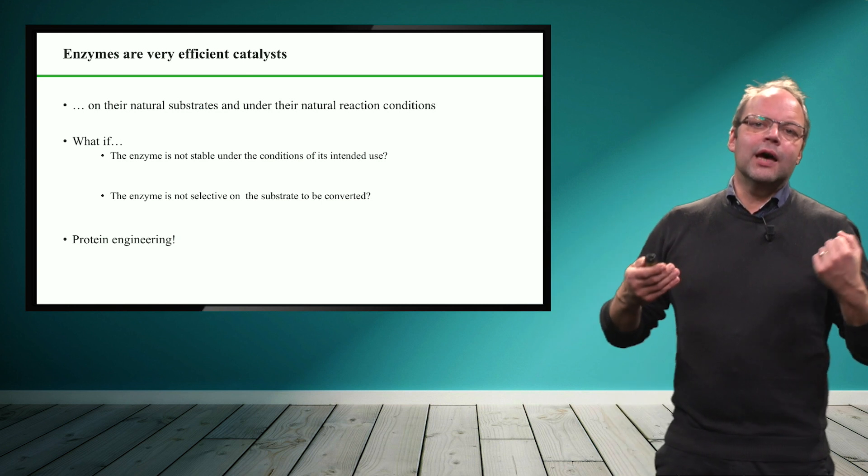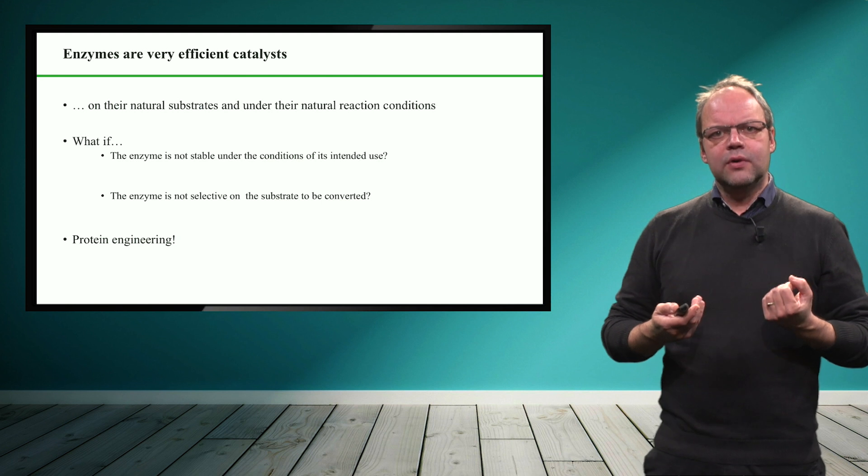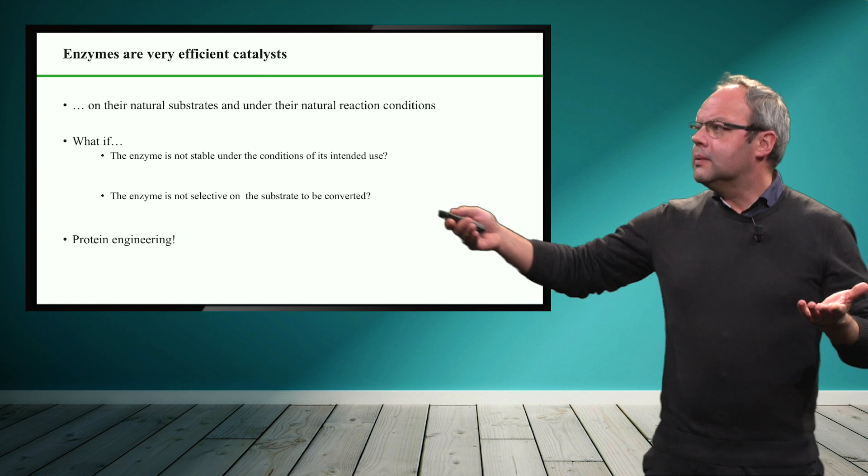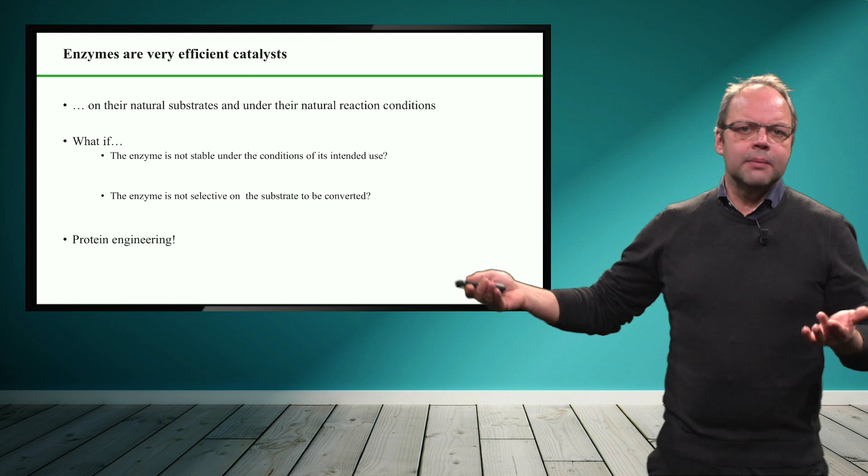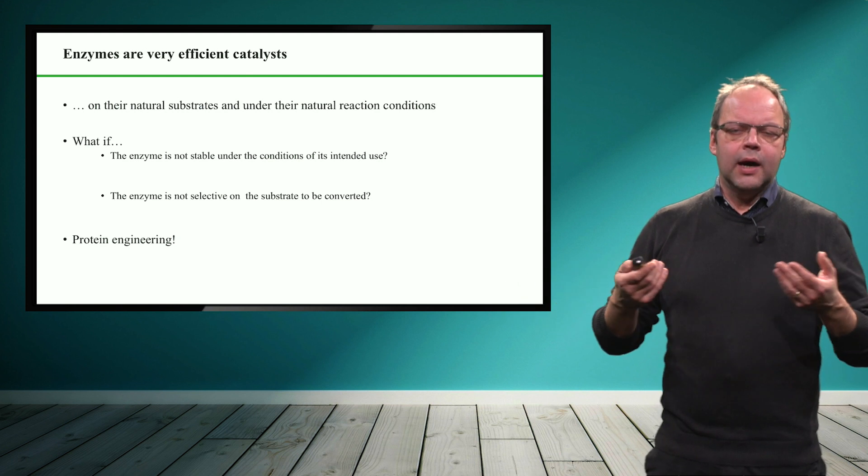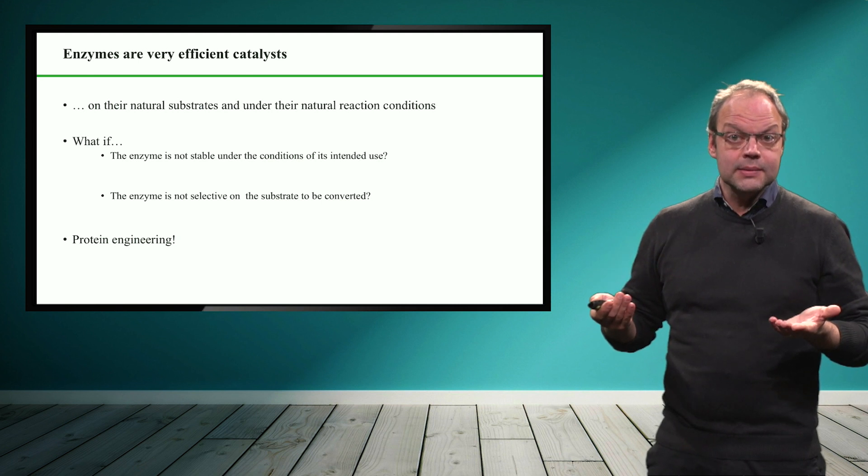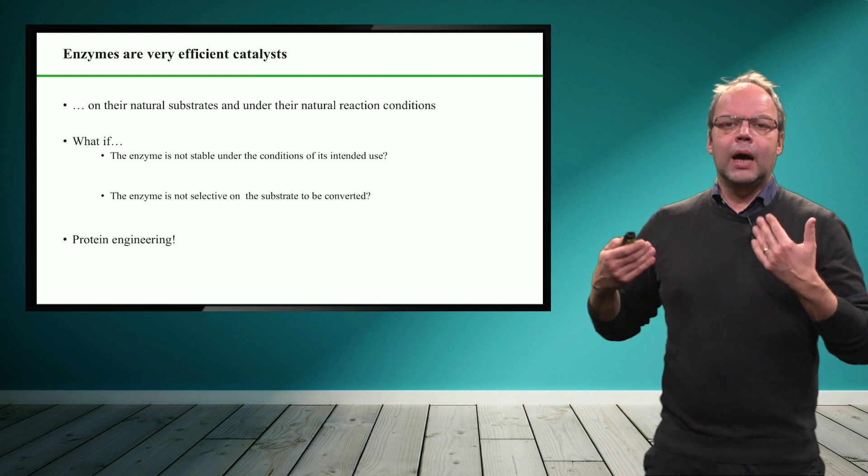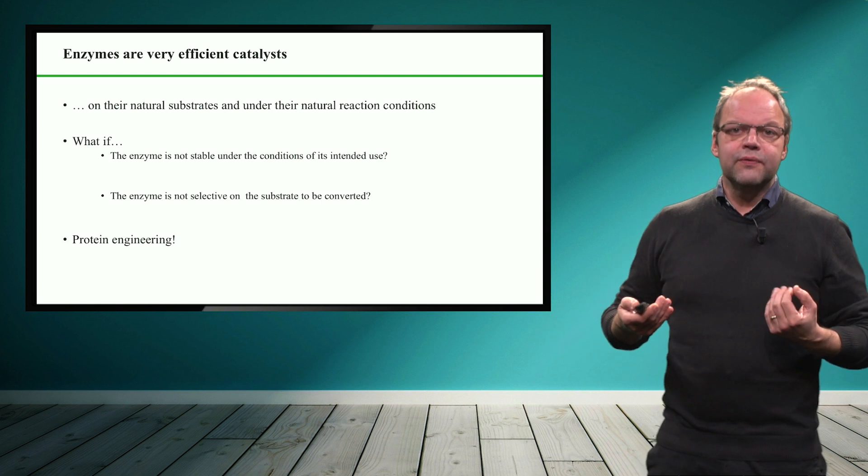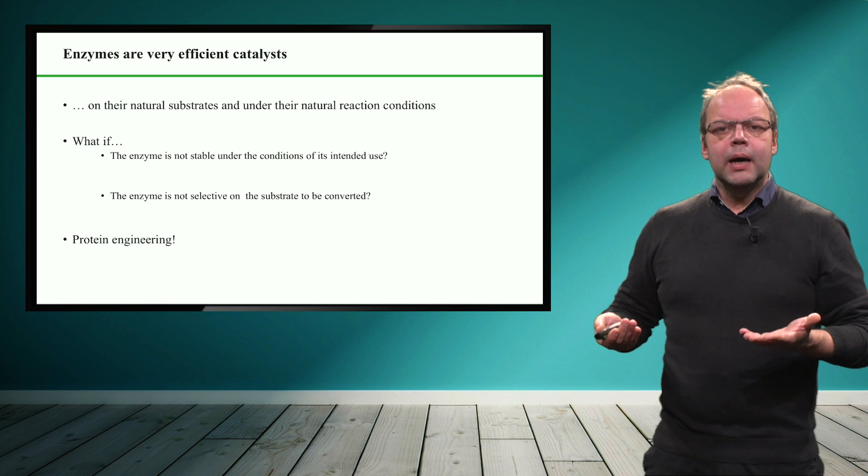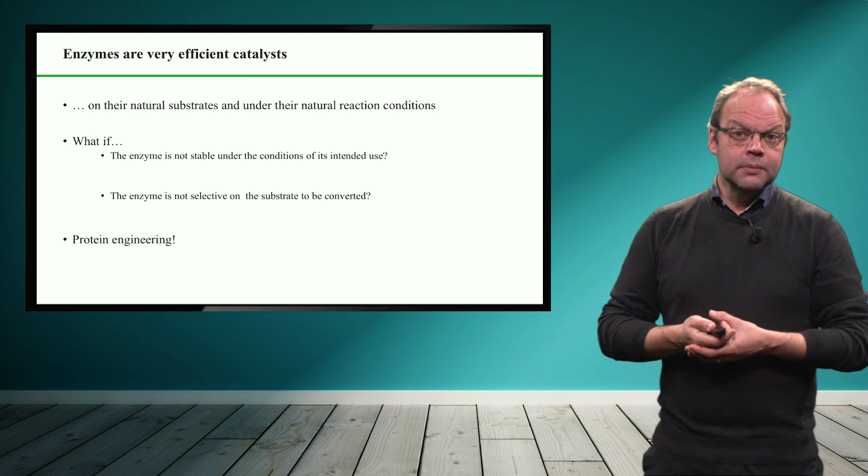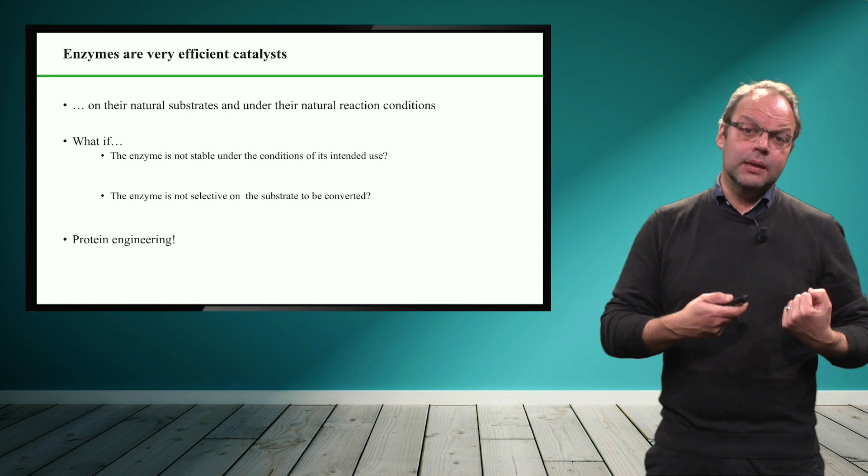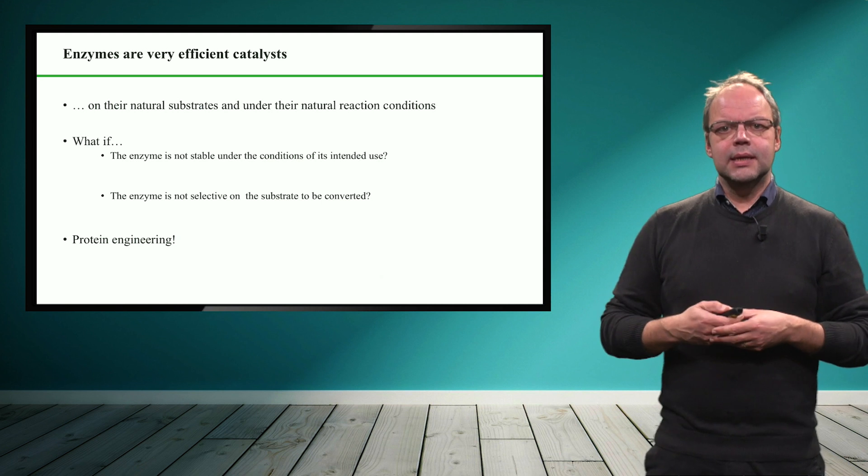They have not been evolved to perform chemical reactions as we like to have them. So there is a very high likeliness that a given enzyme that you isolate from a bacterium, that you isolate from soil, that you isolate from something else, does not really meet the requirements of the chemical reaction, either because it's not stable enough, either because it's not fast enough, or the selectivity of the natural enzyme is not high enough. And that's why we have invented directed evolution in order to improve the properties of an enzyme to the desired properties that we want to have from them. And this is going to be discussed in the next few slides.